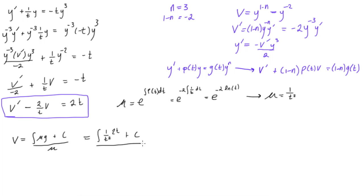Now g is 2t times 2t, plus c over, now this is 1 over t squared, just like that. Okay, so we're running out of space here, but I think we'll be able to do it.